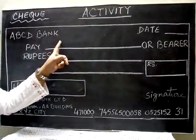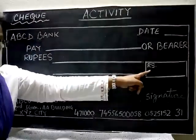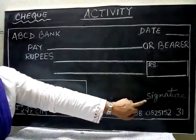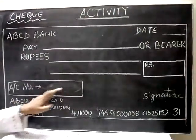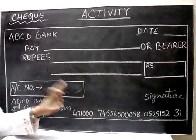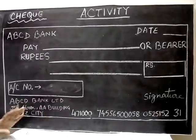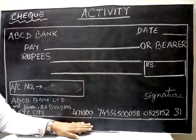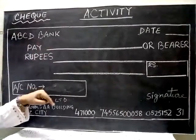You can write anyone's name as the payee — there is no compulsion. After filling the name, amount in numerals, and amount in words, you need to put your signature because you are the person giving the cheque. For the account number, fill any number from 9 to 18 digits — minimum 9, maximum 18 — of your choice. The bank name shown is ABCD Bank Limited, Second Floor, AA Building, XYZ City, and there is also a cheque number. I think you've all got it — let's repeat once more.